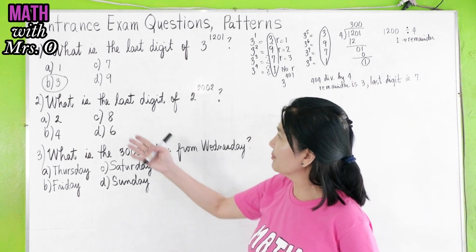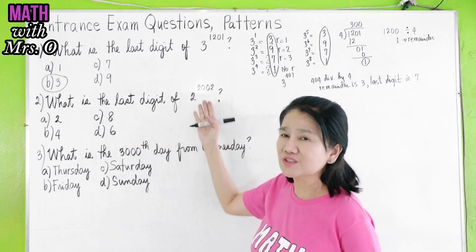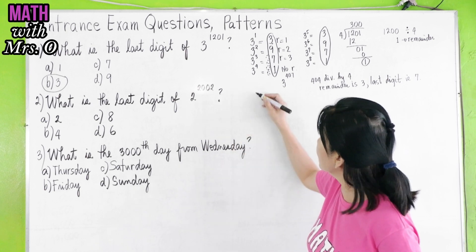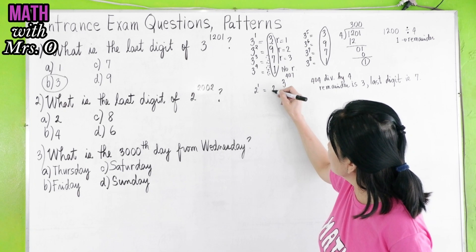Next, problem number 2. What is the last digit of 2 to the 2,002? The same thing happens here. You look for a pattern.